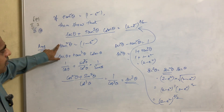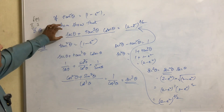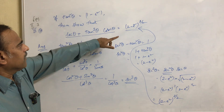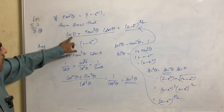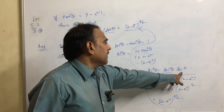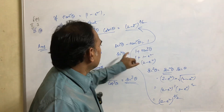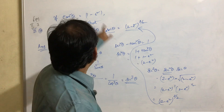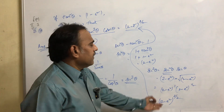To summarize: first write down what is given — tan squared theta equals 1 minus e squared. We need to show that secant theta plus tan cubed theta into cosecant theta equals 2 minus e squared whole power 3 by 2. Simplify the LHS to get secant cubed theta. Write secant cubed theta as secant squared theta into secant theta. Using secant squared theta minus tan squared theta equals 1, we get secant squared theta equals 1 plus tan squared theta equals 2 minus e squared. Substituting gives the result.